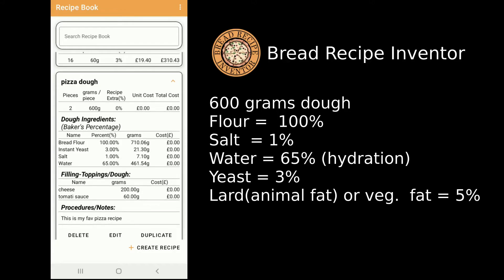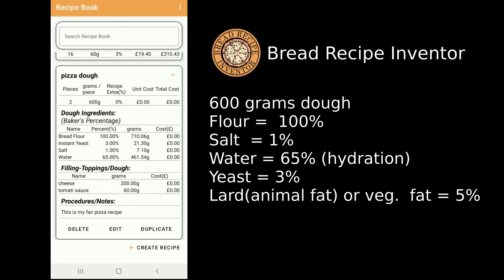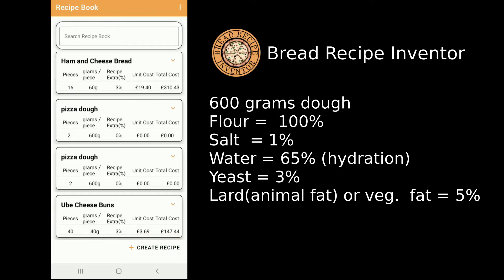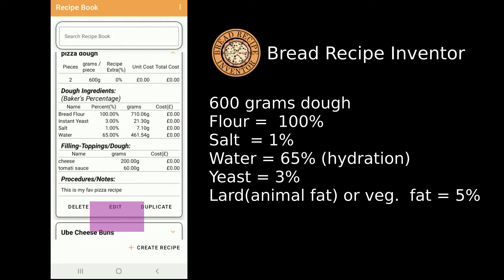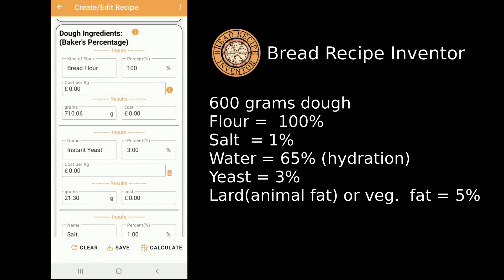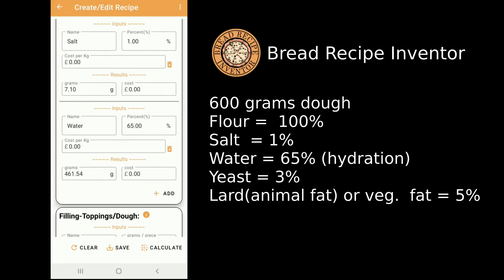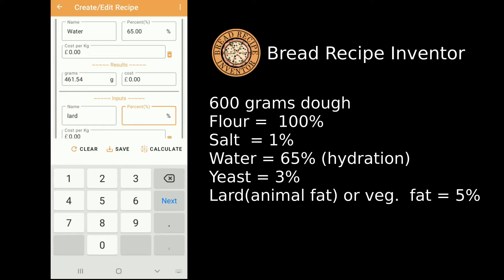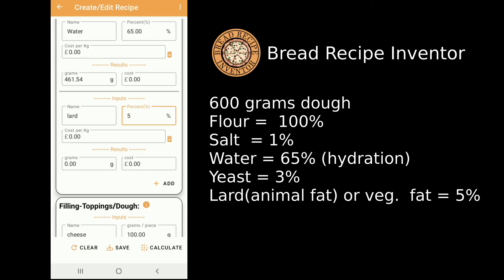If you want to modify or make a variation of a recipe, just click the Duplicate button. You now have two pizza dough recipes. Edit the duplicate — let's add some lard, or vegetable fat, and set it at five percent to make the dough a little bit softer. Five percent with respect to flour — then save it.